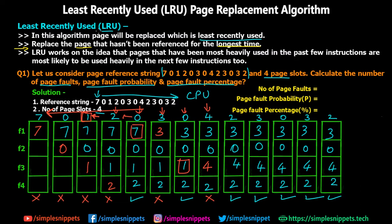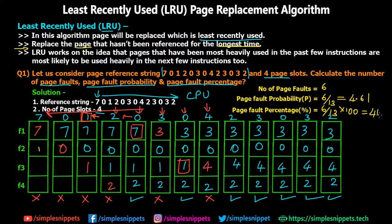To summarize the LRU algorithm: we find the page that hasn't been referenced for the longest time and replace it with the new page. Now let's calculate the three required values. Counting the page fault occurrences, we get 6 page faults. Page fault probability = number of page faults divided by total number of accesses = 6/13 ≈ 0.461. Page fault percentage = (6/13) × 100 = 46.1%.